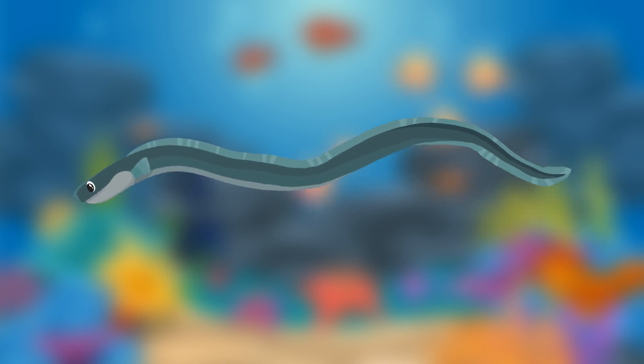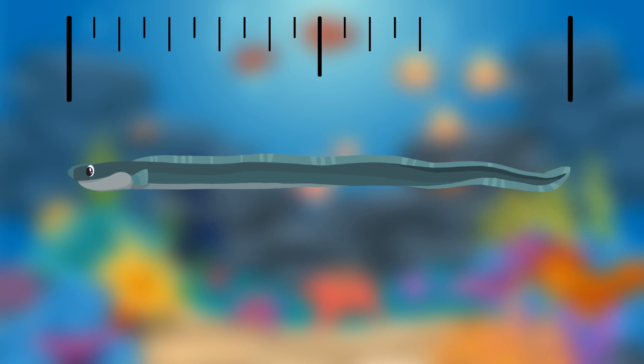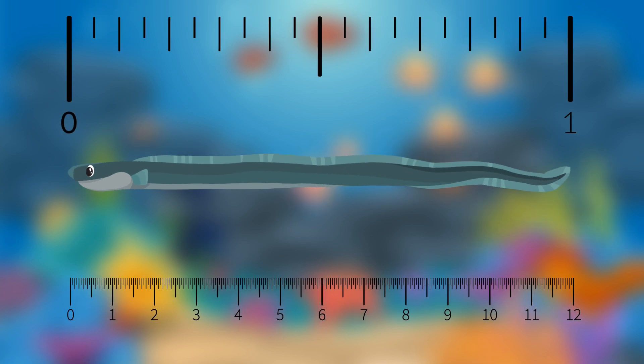The smaller the unit, the more you'll need to use to measure. Check out this eel. He's about 1 foot long. That's the same as 12 inches.